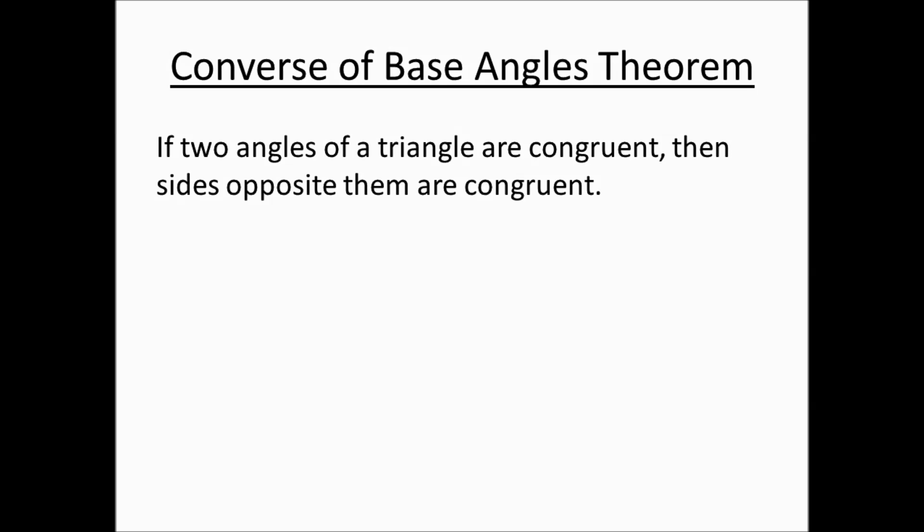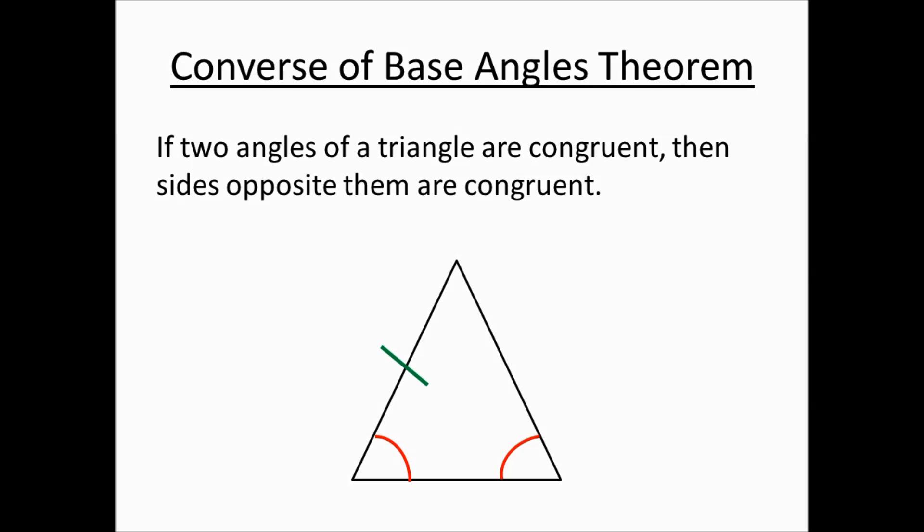The converse of the base angles theorem states that if two angles of a triangle are congruent, then the sides opposite them are congruent. Notice here that we have a triangle in which two angles are congruent to each other, therefore the sides opposite them are also congruent to each other.